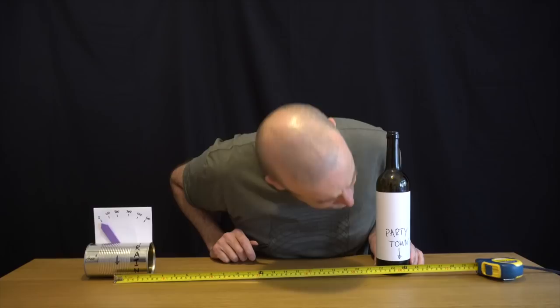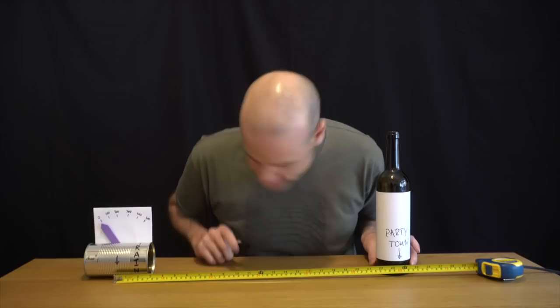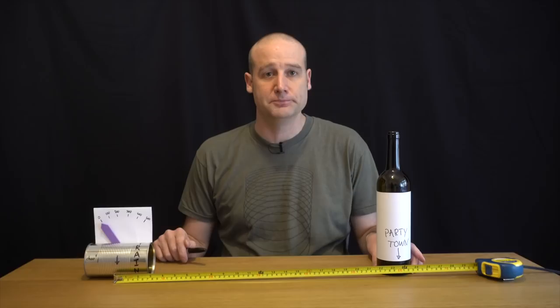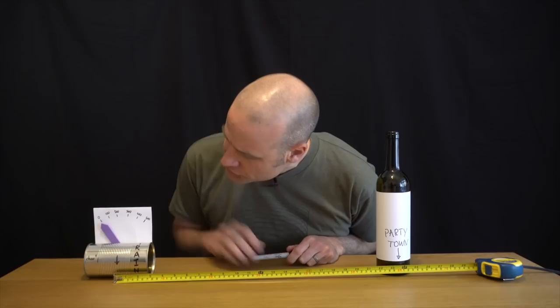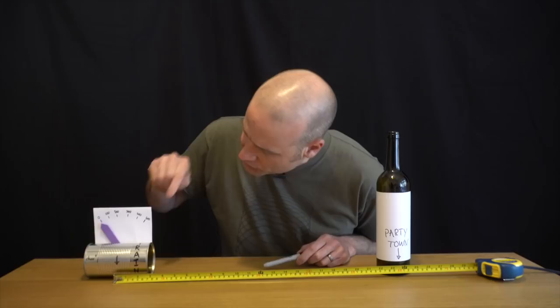Party Town is 600 miles or 600 millimeters, however you want to look at it, away from where the train starts. Party Town I've made out of a bottle. You can get a sense of both my recycling and my current diet.